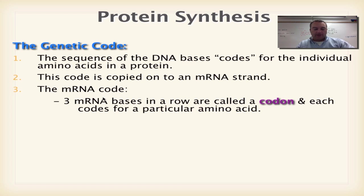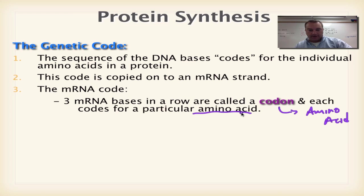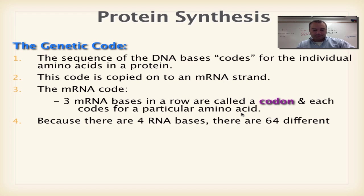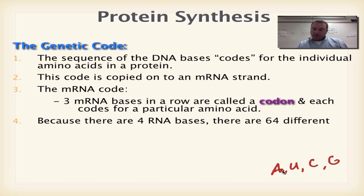On the mRNA, we have three bases in a row — that's a codon. A codon equals one amino acid. Now, we have four RNA bases: adenine, uracil, cytosine, and guanine. So essentially we have an alphabet that's only got four letters in it, and we're only going to make three-lettered words. Those three bases in a row — the codons — are the words.